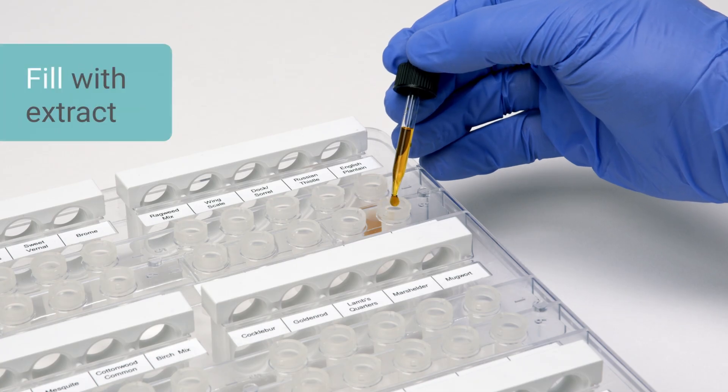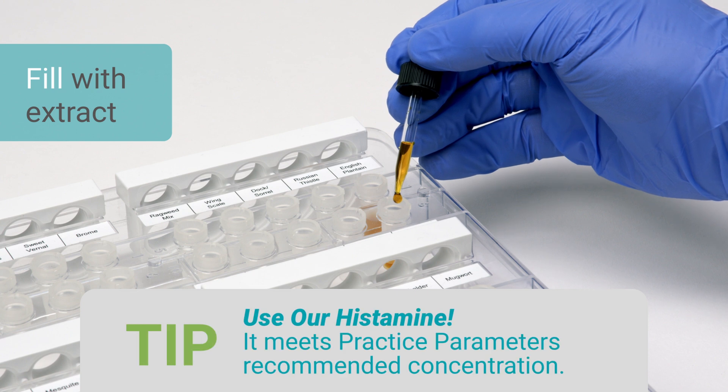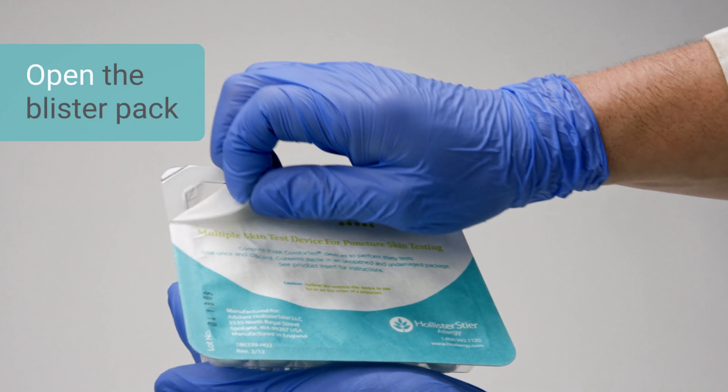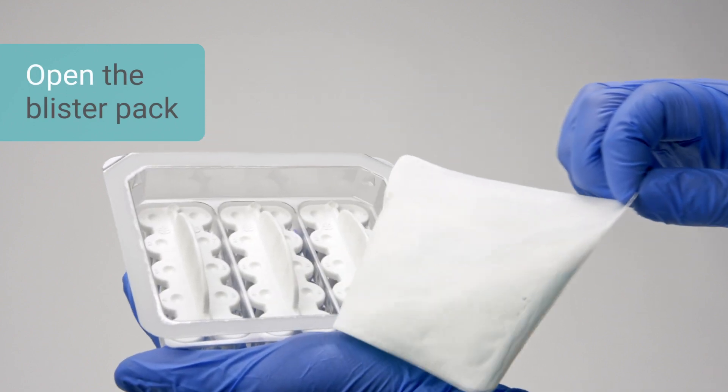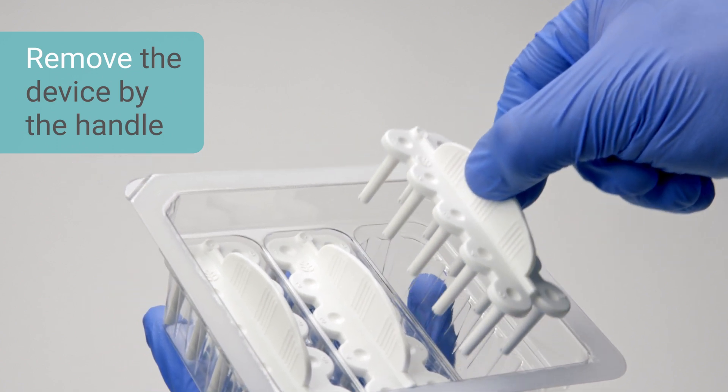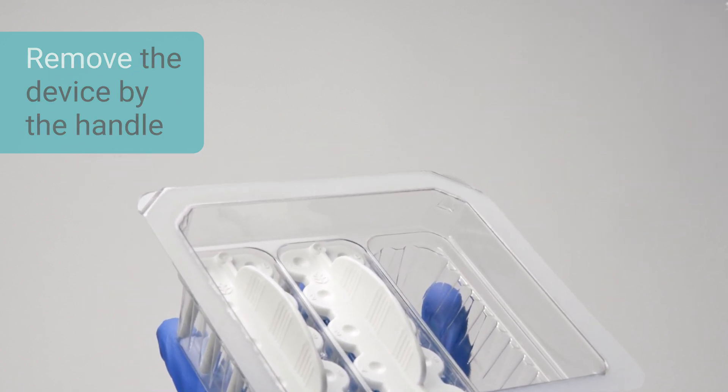Fill the appropriate reservoir with the corresponding extract or control. Open the Comforten or Quintip blister pack. Carefully remove the device by the handle, making sure not to touch any part of the legs or the lancet tips.